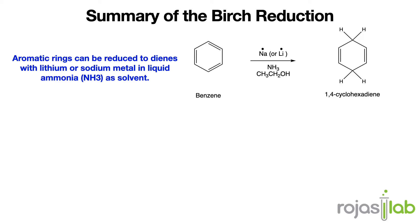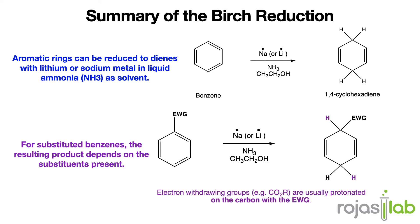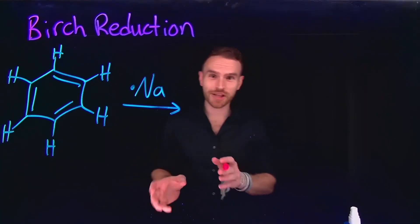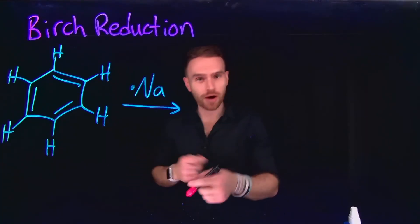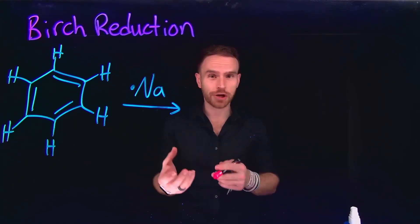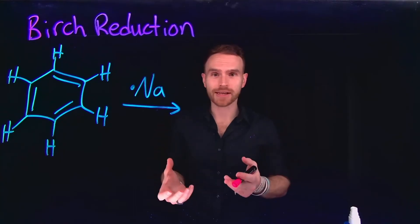Another notable reduction method is the Birch reduction, which specifically targets aromatic compounds containing electron-withdrawing substituents such as carbonyl groups or nitro groups. In the presence of a strong base such as sodium or lithium metal and a proton source like ethanol or ammonia, the aromatic ring undergoes reduction to form a diene or cyclohexadiene intermediate. The Birch reduction is really cool — I highly recommend you try this reaction out on your own so that you can see the visually appealing phenomenon of generating what we call solvated electrons.